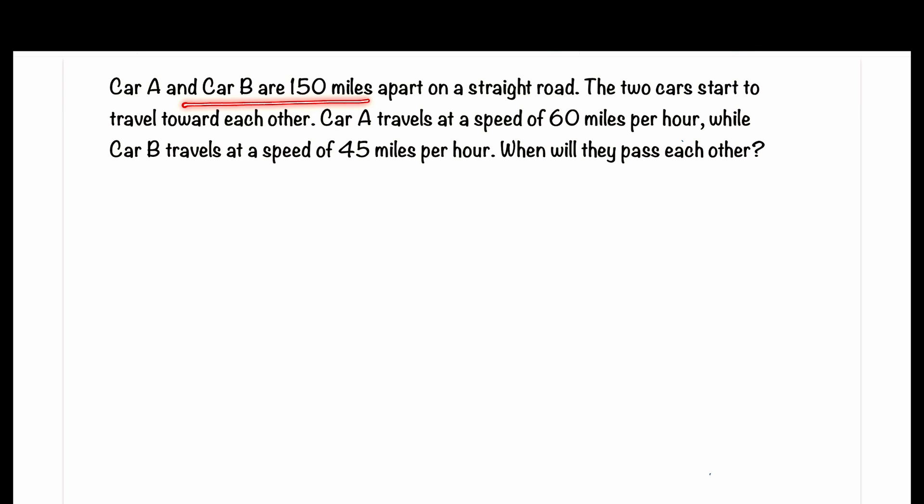Car A and Car B are 150 miles apart on a straight road. The two cars start to travel toward each other. Car A travels at 60 miles per hour, while Car B travels at 45 miles per hour. When will they pass each other?